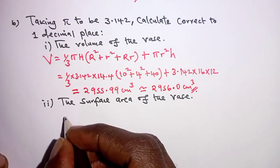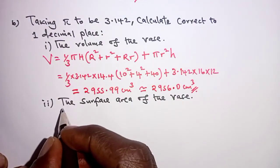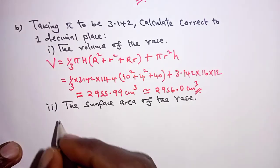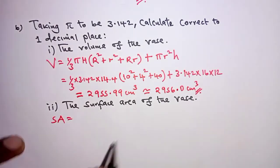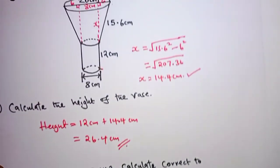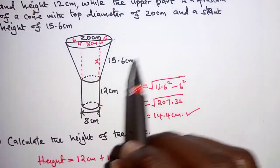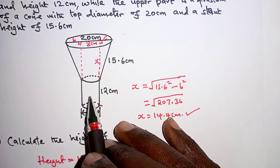Finally, for Roman 2, we have to get the surface area of the vase. Now, in order to determine the surface area, again, let's look at the parts of the solid, we have the frustum and the cylinder. Therefore,